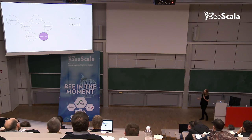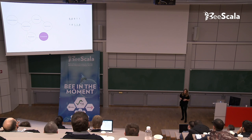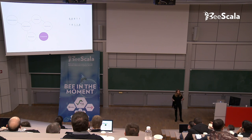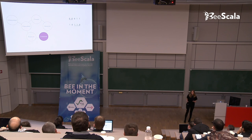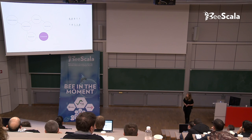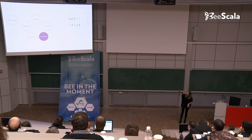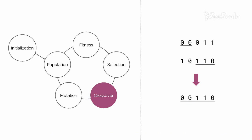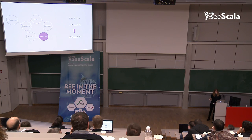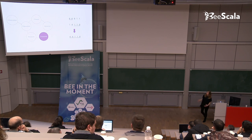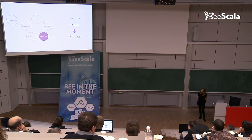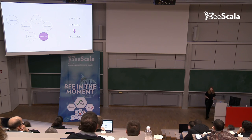The next stage is the crossover. Assuming we got these two chromosomes from the previous stage — two parents — we want to find a way to recombine them in order to produce a child. A simple way to do that is to select some random cut point, take the first part from the first parent and the second part from the second parent. Then we will get a new chromosome, which is our child. Together with other children created the same way, they will form a new generation.